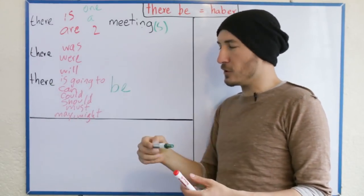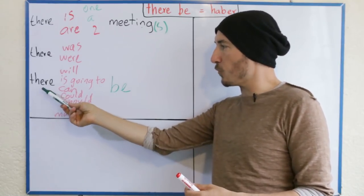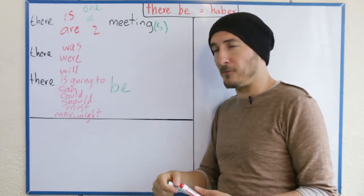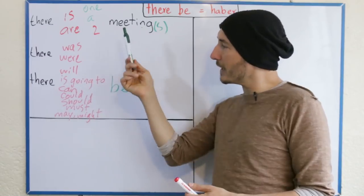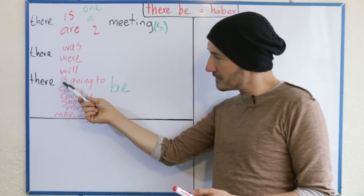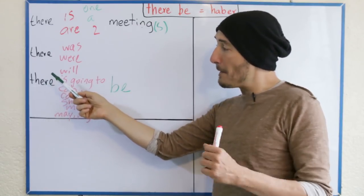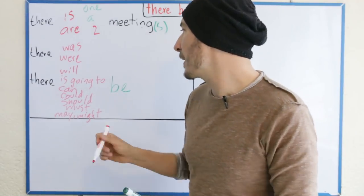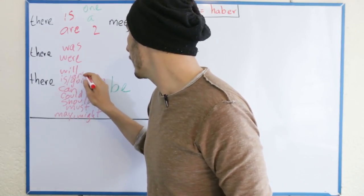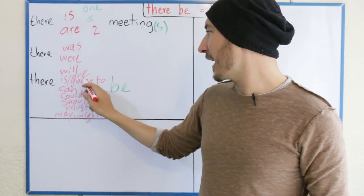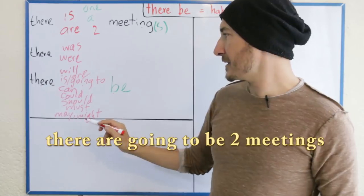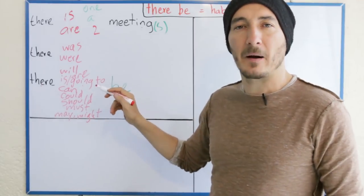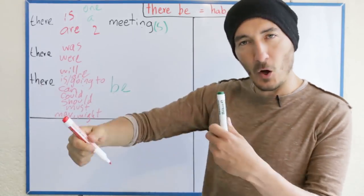There will be two meetings, tres — there will be three meetings, there will be four meetings. Si digo 'va a haber una reunión' — there is going to be a meeting. Pero si son varios, dos o más, pues: there are going to be two meetings. Va a haber tres reuniones — there are going to be three meetings. Va a haber cuatro reuniones — there are going to be four meetings. Va a haber cinco reuniones — there are going to be five meetings, and so on and so forth.